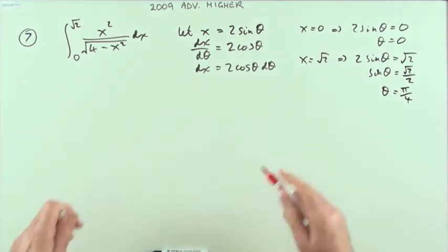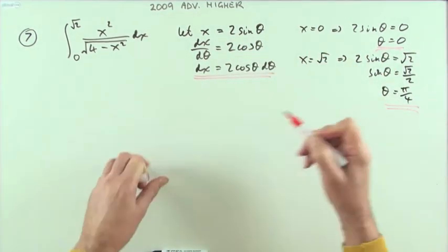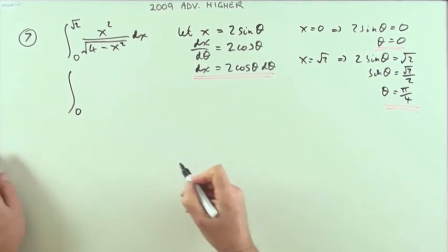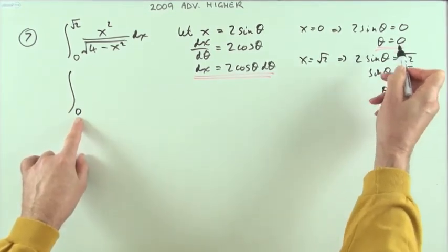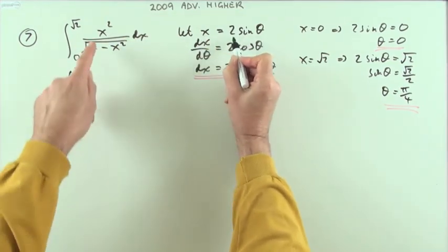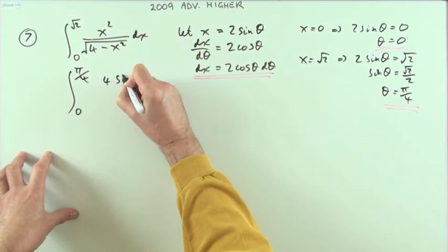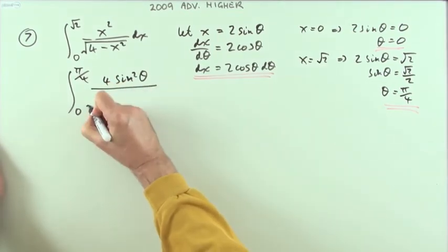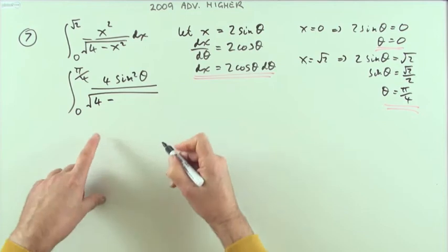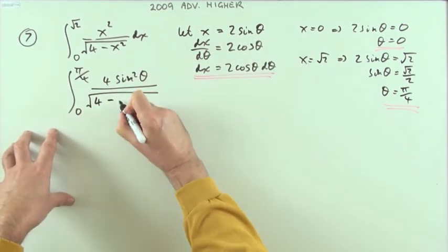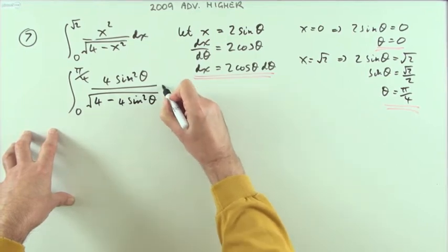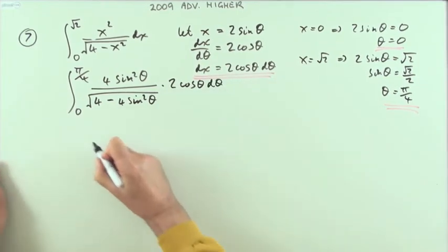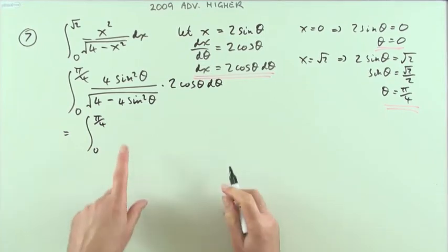So we're all ready for the substitution. Let's put all of these ingredients together. We've got limits zero and π/4. x squared has a direct replacement, so that'll be four sin squared θ. Under the square root of four minus x squared, substituting gives four minus four sin squared θ. Then dx is two cos θ dθ.